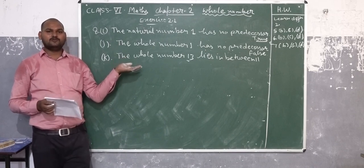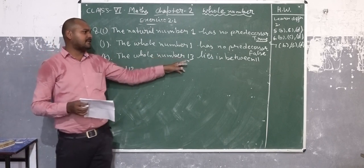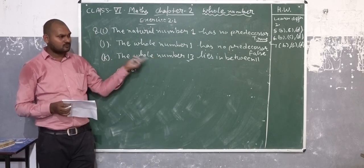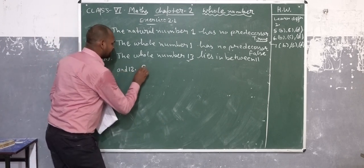See, 1, 2, 3, 4, 5, 6, 7, 8, 9, 10, 11, 12, 13. And 13 comes after 12. 13 comes after 12. So how they don't make it? So the statement is false.